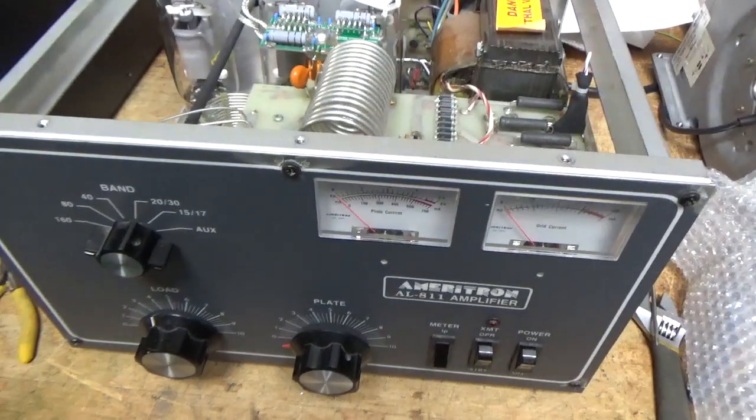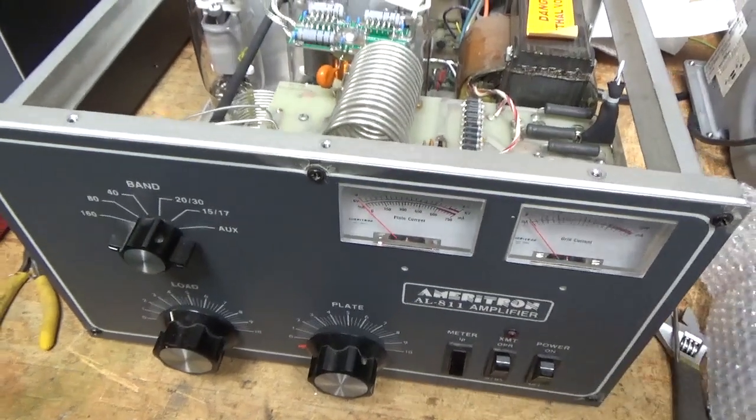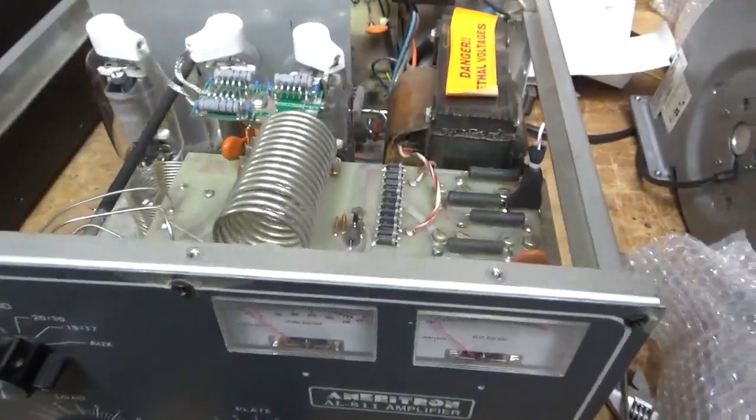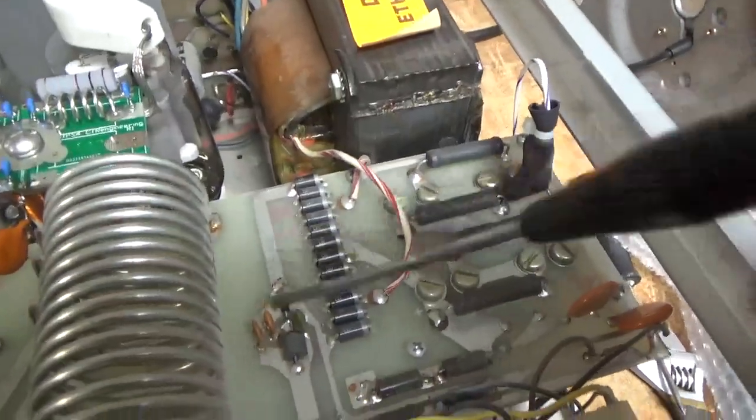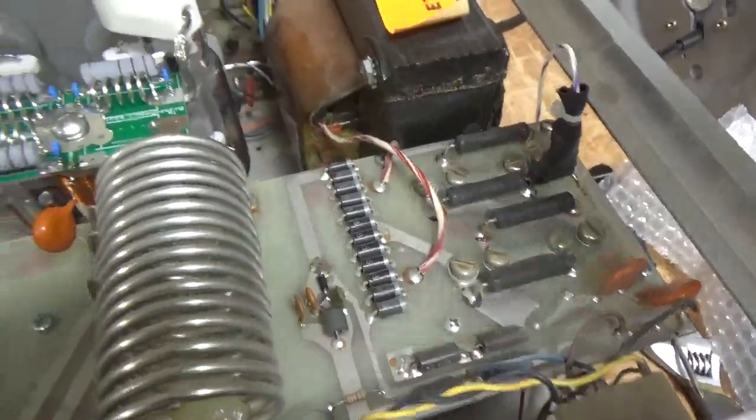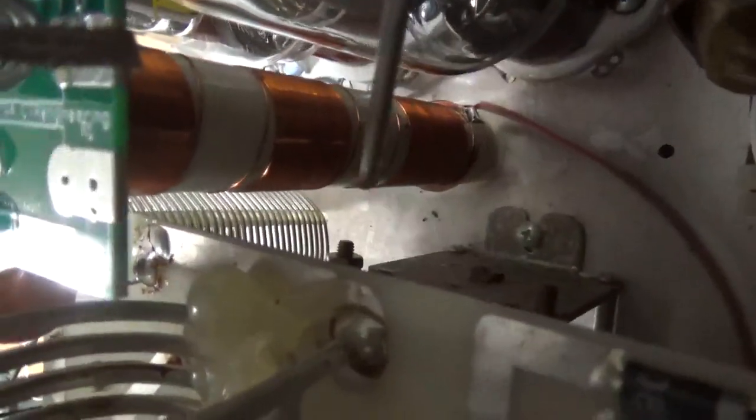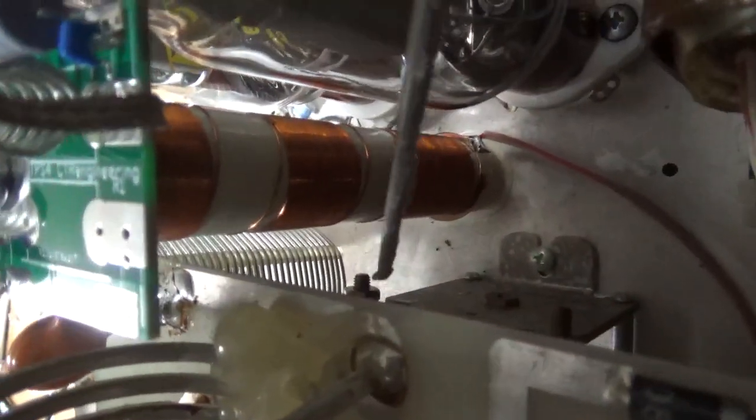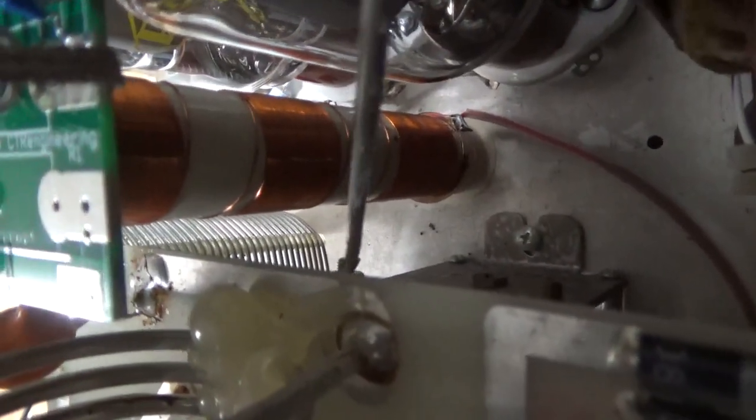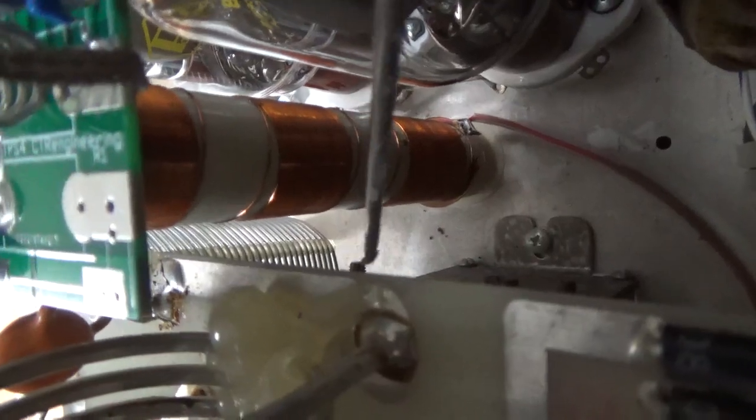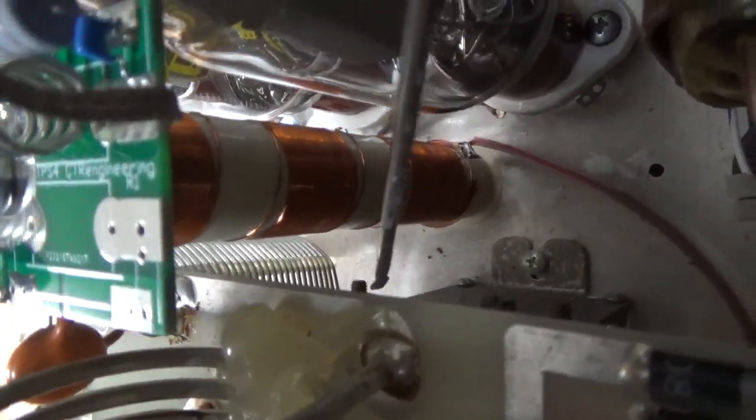I'm back with the completed Ameritron AL811. I'll go over everything I did. Did the bias modification, changed the meter protection diode, it was shorted. The nut on the back of the air variable cap on the plate side was backed off almost to the end of the thread, so I put an internal tooth lock washer on, and then put the nut back on and snugged it up with a wrench.